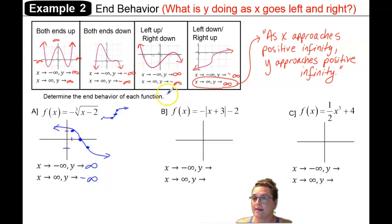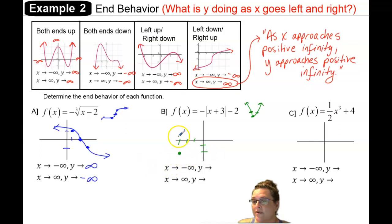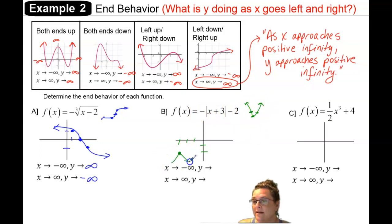Looking at example b, we're going to take the parent graph of an absolute value, which graphs a v-shape that goes through (0,0), (1,1), and (−1,1). We move down 2 for the k value, so we're down to negative 2. The x plus 3 gives h = −3, so we go to the left 3 units. Down 2 and to the left 3 gets us to a vertex at (−3, −2). Then the negative a in the front reflects us in the x-axis, so we flip this v-shape so that it opens down.